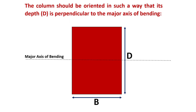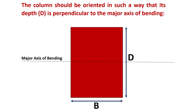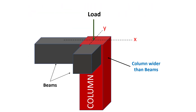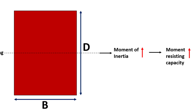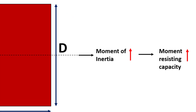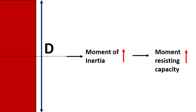The column should be oriented in such a way that its depth is perpendicular to the major axis of bending. When a column is connected to beams at right angles, it will experience moments as well as the axial load. In these situations, the column should be oriented so that its depth is perpendicular to the major axis of bending. This will increase the moment of inertia, which means greater moment resisting capacity.